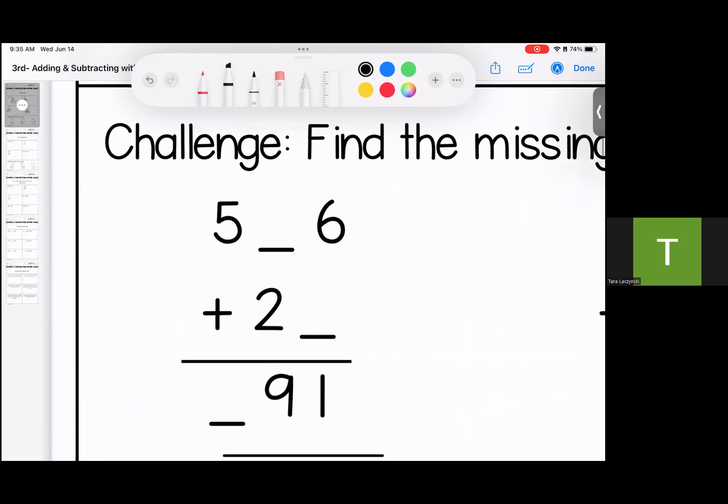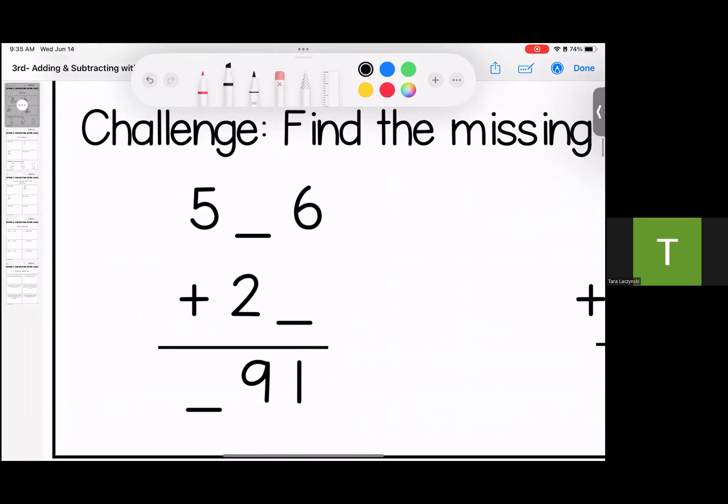For this challenge, we had to find the missing number, so I had to ask myself, 6 plus what gave me a 1. Now, I know that a 1 is going to have to be a carry because 6 plus a number is not going to give me something less. So if I did 6 plus 5, it would give me 11. Now I have a carry. I'm looking for a total of 9. 2 plus my carry is 3, I need 6 more to get 9, and then I come over here and I'm left with 5.